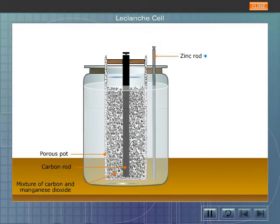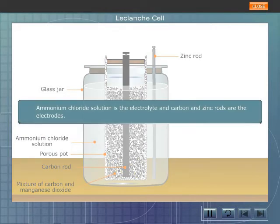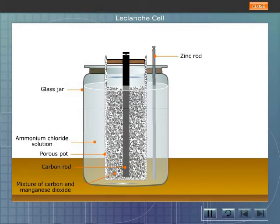Ammonium chloride solution is the electrolyte, and carbon and zinc rods are the electrodes. The mouth of the glass jar is sealed with pitch so that the ammonium chloride does not seep out.